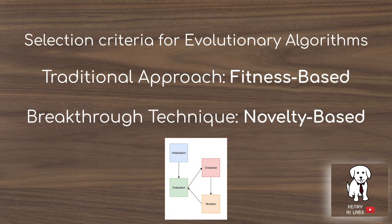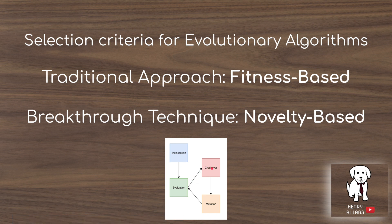The selection criteria for evolutionary algorithms involves a fundamental loop: initialize, evaluate, crossover, mutate, and then repeat the evaluate, crossover, mutate loop several times.